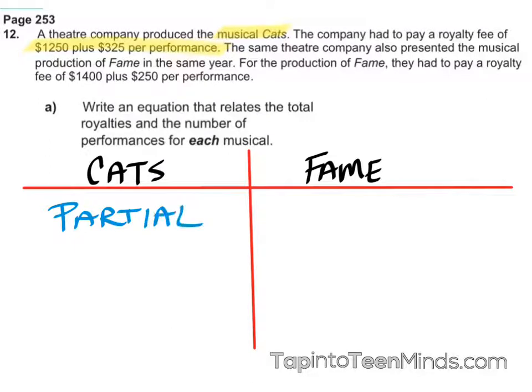And how about the actual equation? Before we do the equation, Hannah, can you tell me what's the general form for a partial variation? Y equals MX plus B. Let's talk real quick — what is the M value when I talk about Y equals MX plus B? What does M represent? Yes, Megan? The constant of variation.